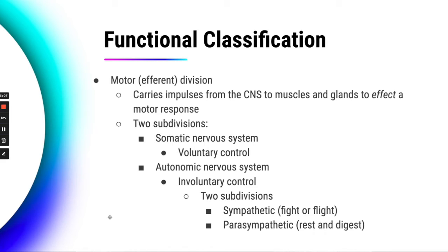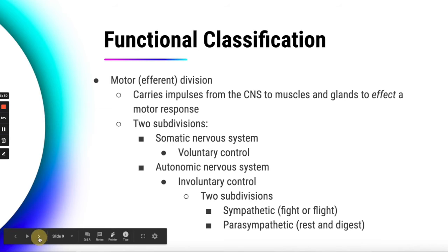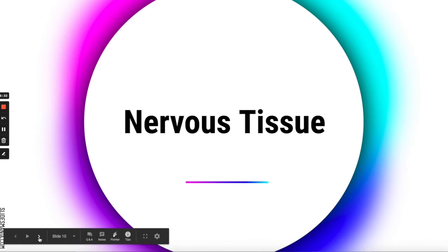Your parasympathetic nervous system would be controlling things in normal everyday conditions. The sympathetic nervous system causes your heart rate to increase and your breathing rate to increase in response to stressful conditions. The parasympathetic system keeps your heart rate, breathing rate, and everything else within a normal range, because hopefully you're not under stressful conditions right now.